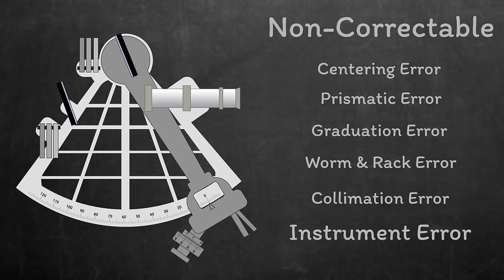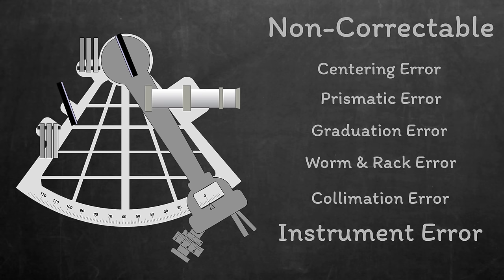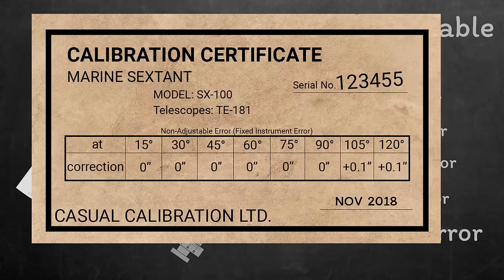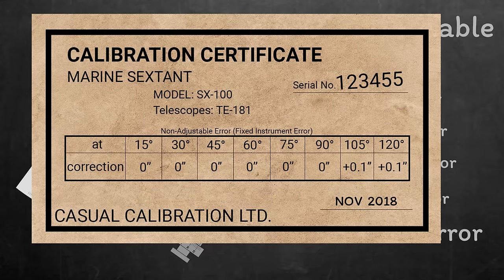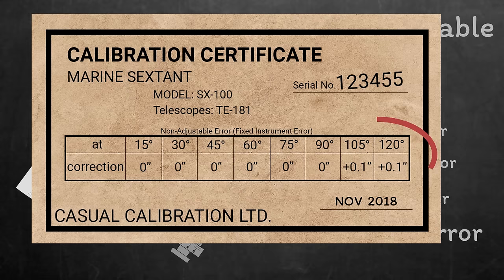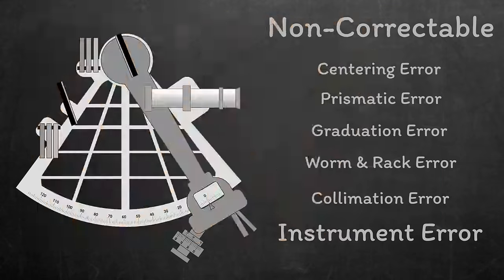And finally we've got instrument error. This is actually just the total of all the non-correctable errors that we've already discussed. It gives the user an easy way to apply all those manufacturing errors to their readings. Sextants come with a calibration card which gives this instrument error. In theory the error should be negligible, but you can see from this example card that as the sextant reaches its extreme setting you do need to take account of the instrument error.